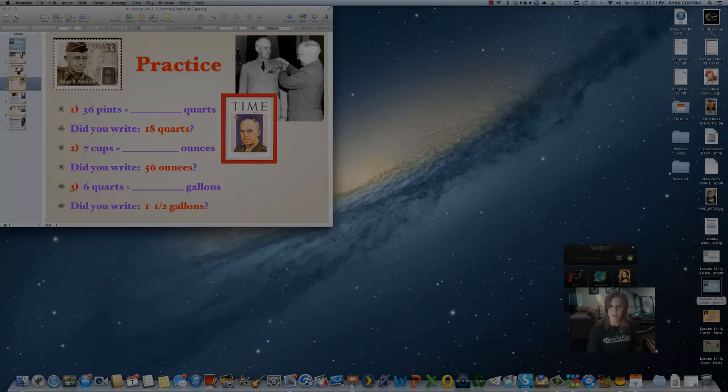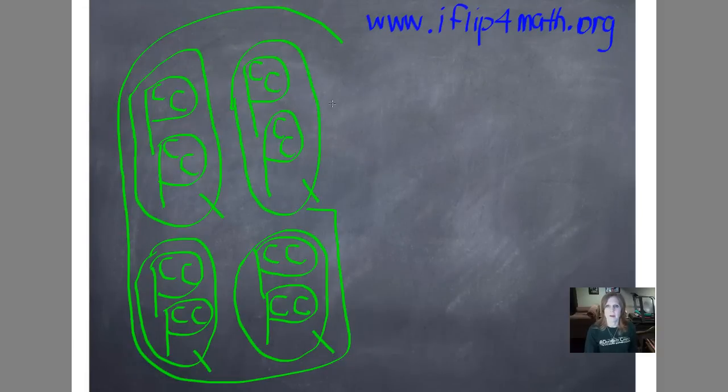Okay, so I started drawing a G-chart out for you, but if you want to just print one out, you can go to www.iflipformath.org and just print one out. You can also just draw this on your paper. So I draw a big G, and this stands for my gallons, because I have one gallon. And one gallon is equal to four quarts. So I actually have four Q's inside my gallon, four quarts in a gallon. Inside each quart, or equivalent to each quart, are two pints. See, there are two P's for two pints. And then inside each pint, and you kind of have to make the loop on your P kind of big, you're going to put two C's. There are two cups in every pint.